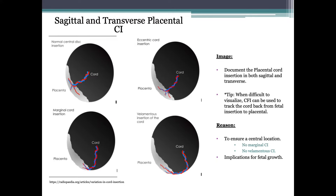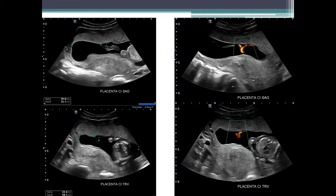Sagittal and transverse placental cord insertion: documenting the position of the placental cord insertion in both planes is very important. Due to the shape of the placenta, it is possible to be centrally located in one plane while simultaneously being marginal in the other. Marginal cord insertion is characterized by a measurement of less than two centimeters from the placental edge. A velamentous cord insertion must be accurately identified, entailing assessment for vasa previa via endovaginal exam and possibly monitoring fetal growth going forward.